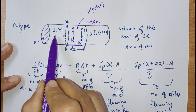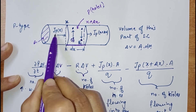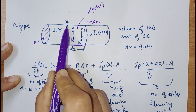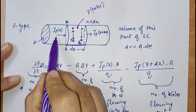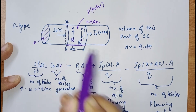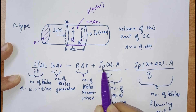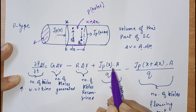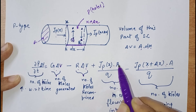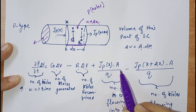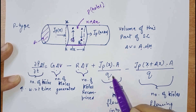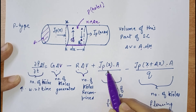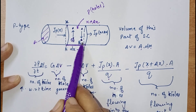Now we will consider the inflow of holes into this particular slice at point x. We can write the holes entering into this particular slice as jp(x) — which is also a function of x — multiplied by the cross-sectional area, divided by the charge on the holes. This gives the number of holes entering into this slice.